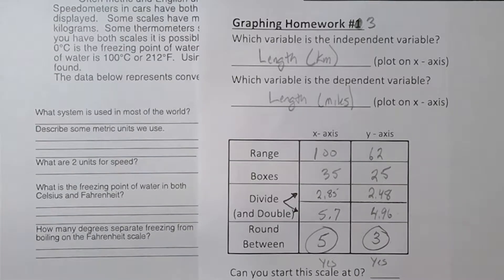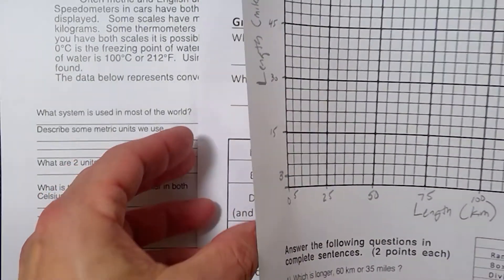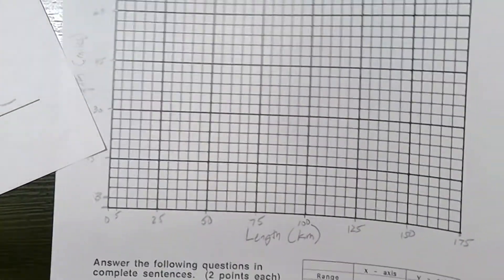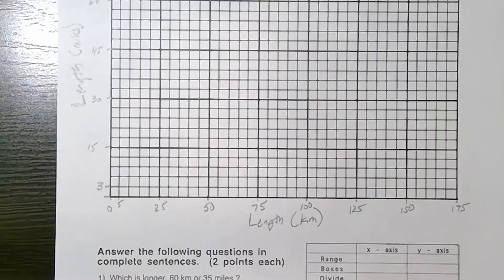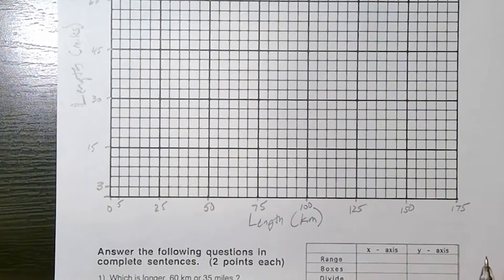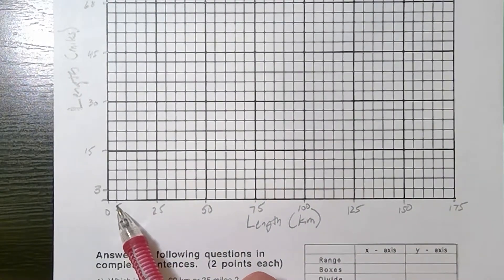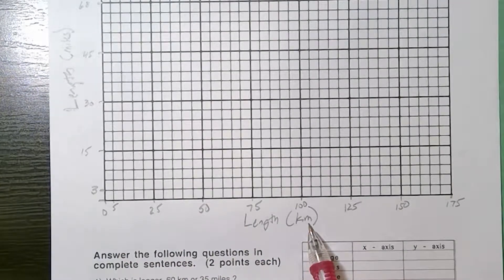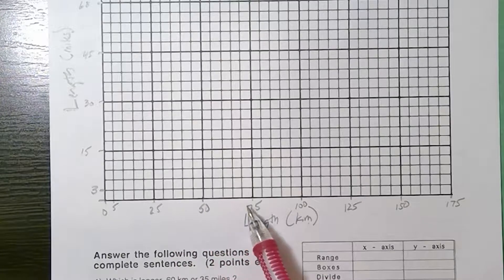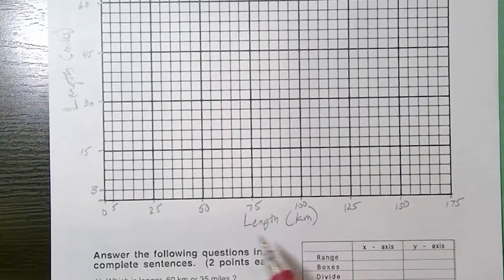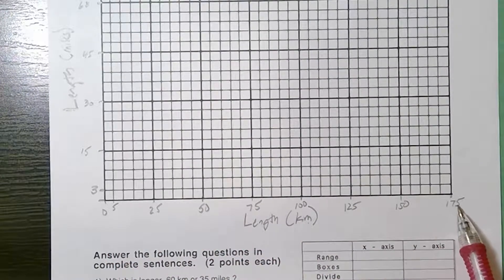So if I have a copy of this with it filled out, this is what we're doing. We said going by fives. Each individual box would be 5 kilometers horizontally. So every five, every dark line is going by 25. So this is going to go from 0 to 175.